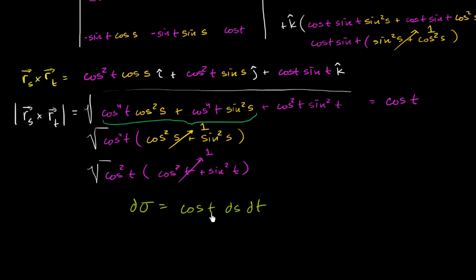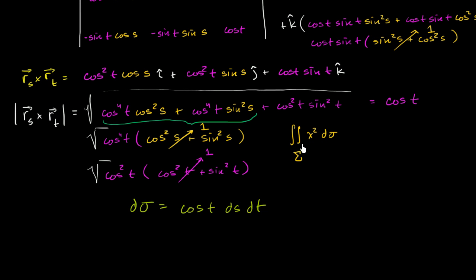Hopefully that makes you satisfied — that was just based on how we parameterized t. Now with that out of the way, let's actually evaluate the integral. Our original integral, just to remind us, was the surface integral of x squared d-sigma. We already know what d-sigma is; now we just have to write x squared in terms of the parameters.